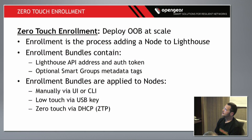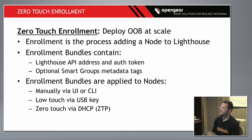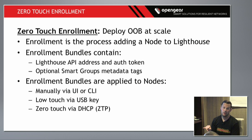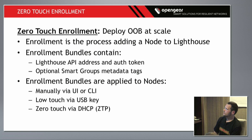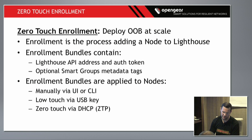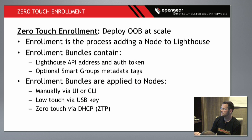Talking about a couple more features — zero-touch enrollment. We've extended the ZTP process — zero-touch provisioning — whereby you get a DHCP option that gives you a URL to pull your config and firmware. We've extended that to actually pass the enrollment parameters as well: the address of the RESTful API endpoint for Lighthouse, so you can get that enrollment and that OpenVPN bundle. You can apply the enrollment bundle via ZTP, UI, CLI, or USB key.